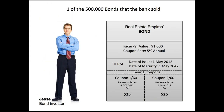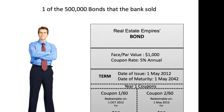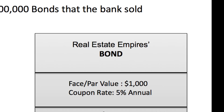Here's one of the 500,000 bonds that the bank sold, and it went to this investor named Jesse. As we look at the bond that Jesse's holding, we're going to start right at the top and work our way down. At the top of the bond is simply the name of the real estate company that issued the bond — the person responsible for ensuring that Jesse receives his coupon payments.